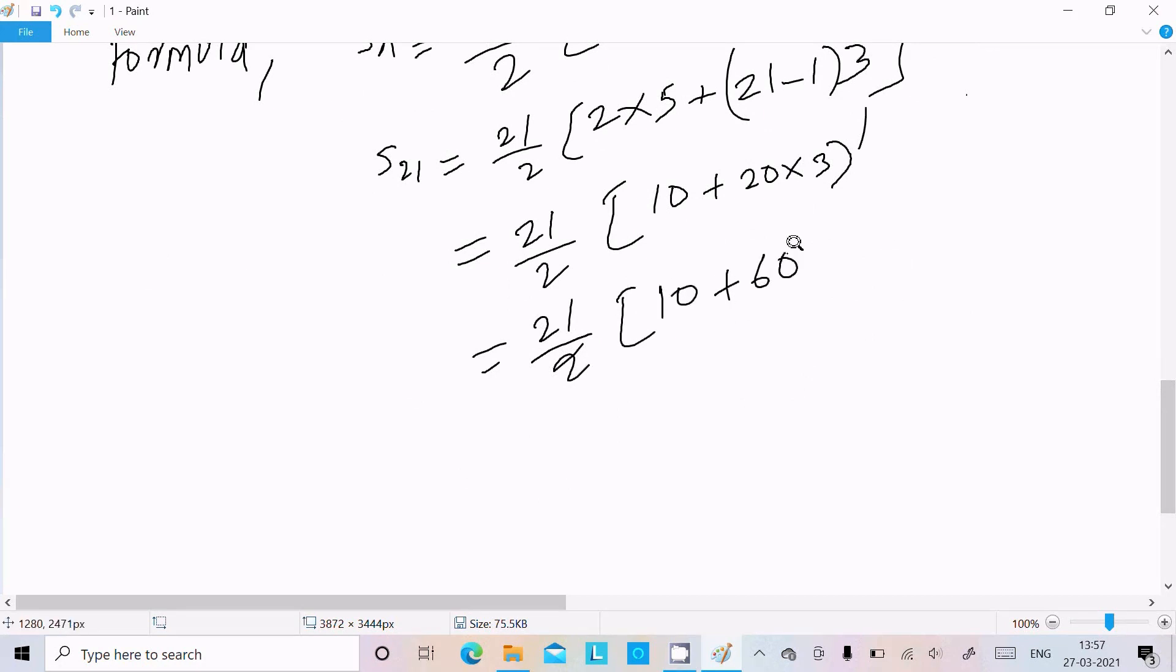This equals (21/2)×70. 70/2 = 35, so we have 21×35.